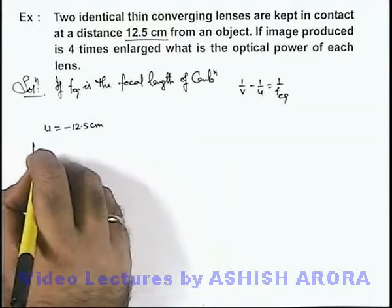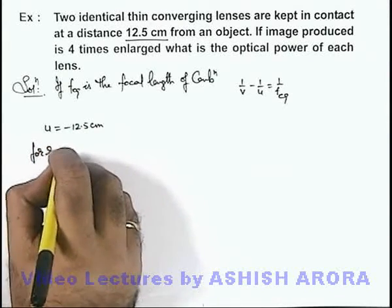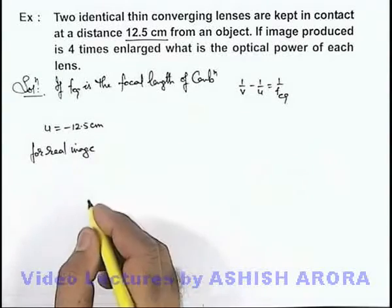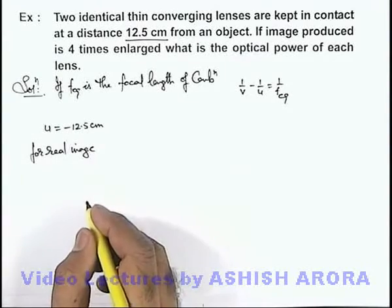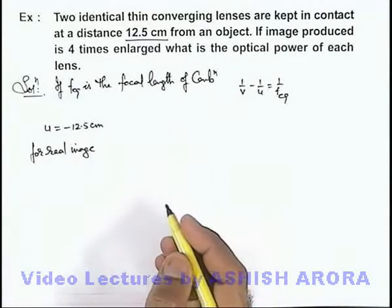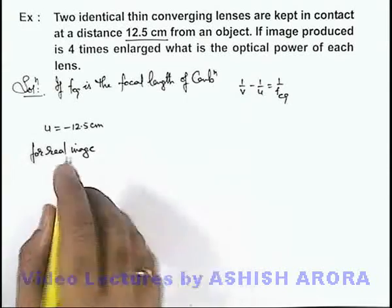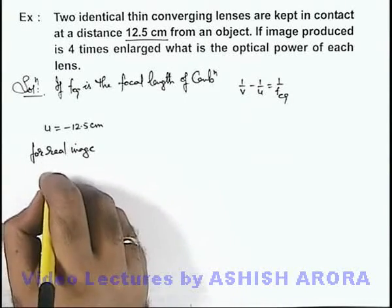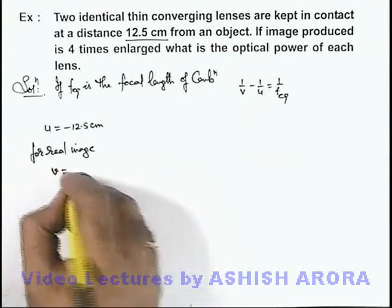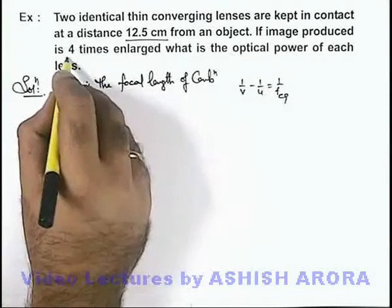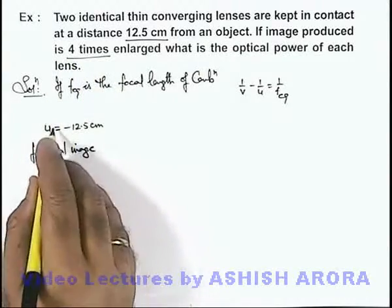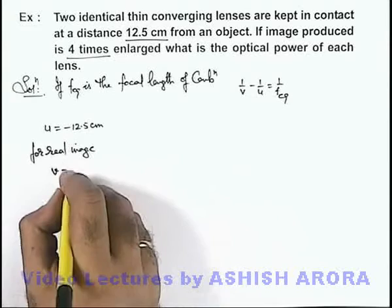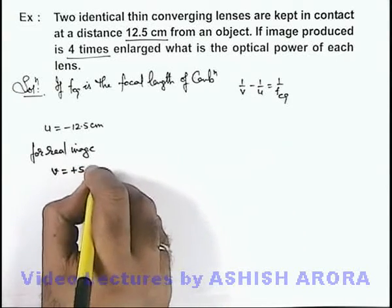For a real image — I am leaving virtual image analysis as an exercise for you, as the problem can be solved in two ways by taking the image to be real or virtual. If we consider it to be real, v can be taken as 4 times the object distance on the other side, so it will be plus 50 centimeters.